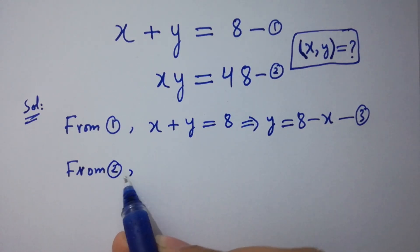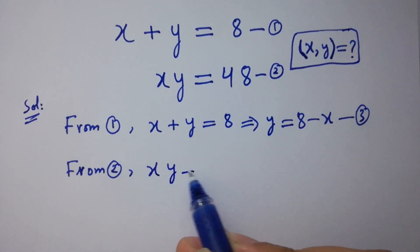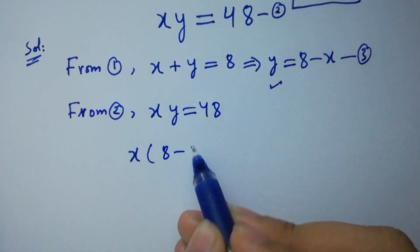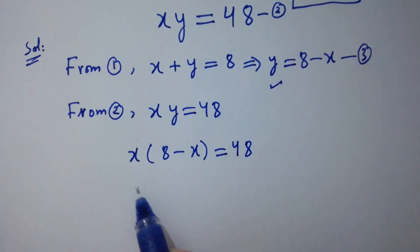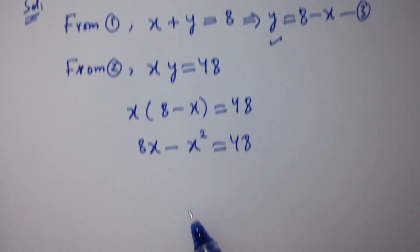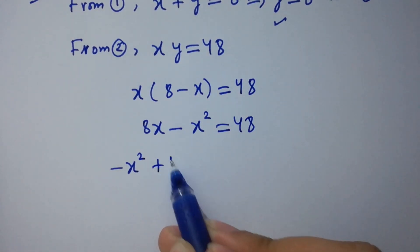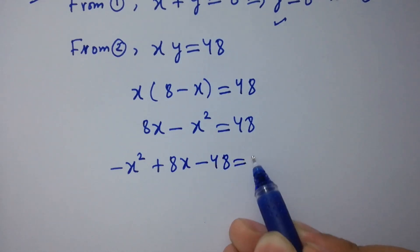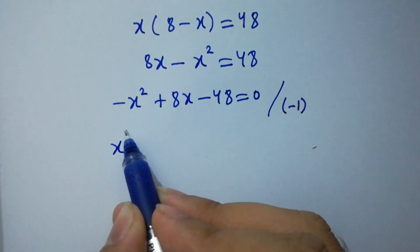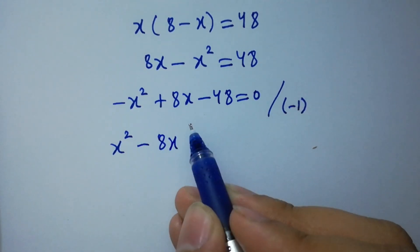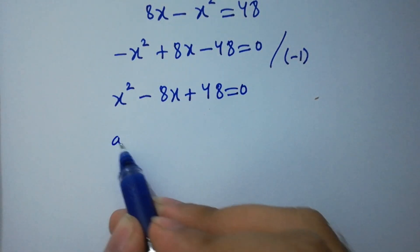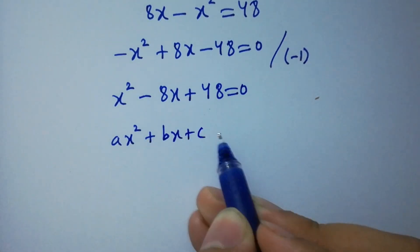From equation 2 we have x times y equal to 48. Substituting the value of y, we have x times (8 minus x) equal to 48, giving 8x minus x squared equal to 48, so minus x squared plus 8x minus 48 equal to 0. Dividing by minus 1 on both sides gives x squared minus 8x plus 48 equal to 0. This is a quadratic equation of the form ax squared plus bx plus c equal to 0.